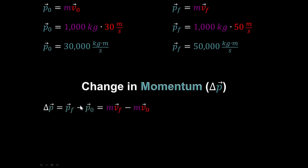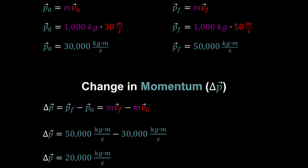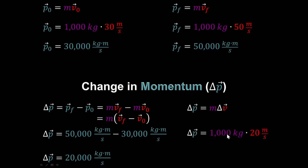Let's calculate the change in momentum. You take final minus initial, or mass times velocity-final minus mass times velocity-initial. Subtracting gives 20,000 kilogram meters per second. Another way: factor out the mass, giving mass times (v-final minus v-initial), which is mass times the change in velocity. The change in velocity was from 50 to 30, giving 20 — same result. So we can calculate the change in momentum as mass times the change in velocity.